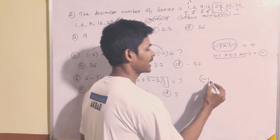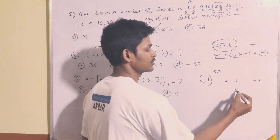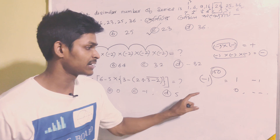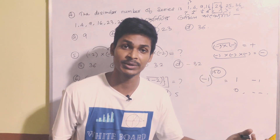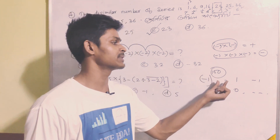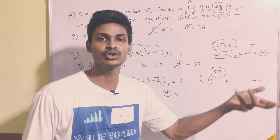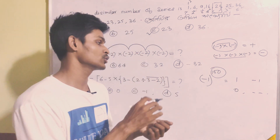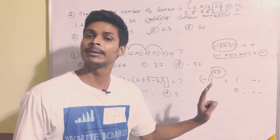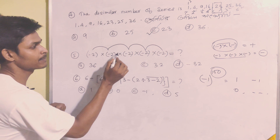A question: minus 1 to the power 100 equals? If you multiply minus 1 an even number of times, the answer is positive 1. So minus 1 to the power 100 — since 100 is even — the answer is plus 1.